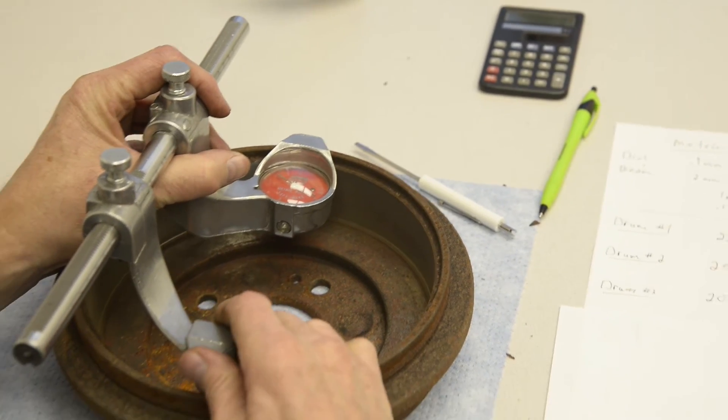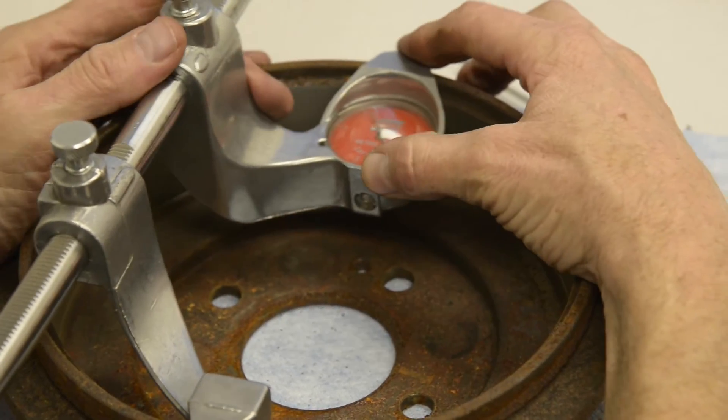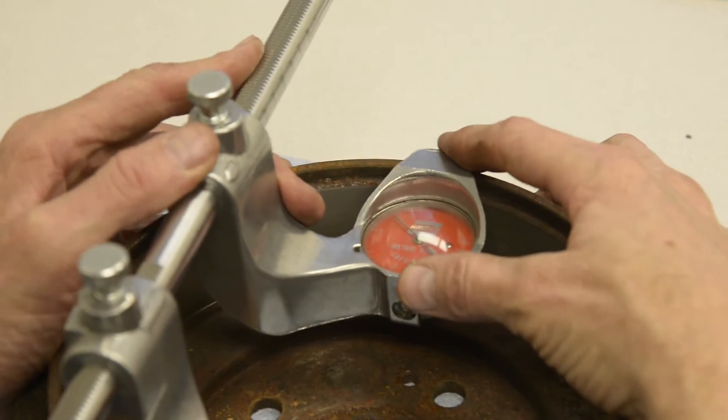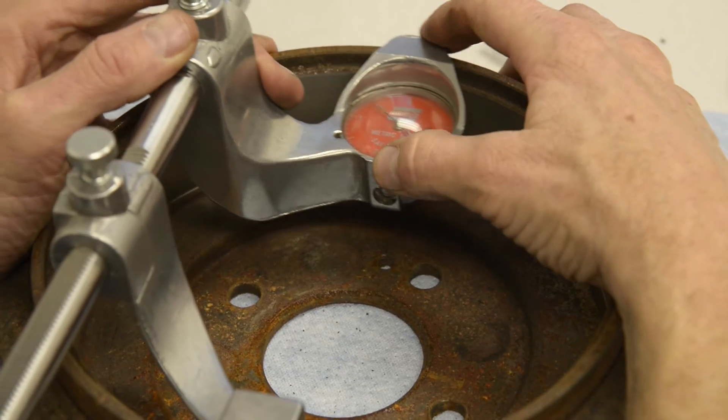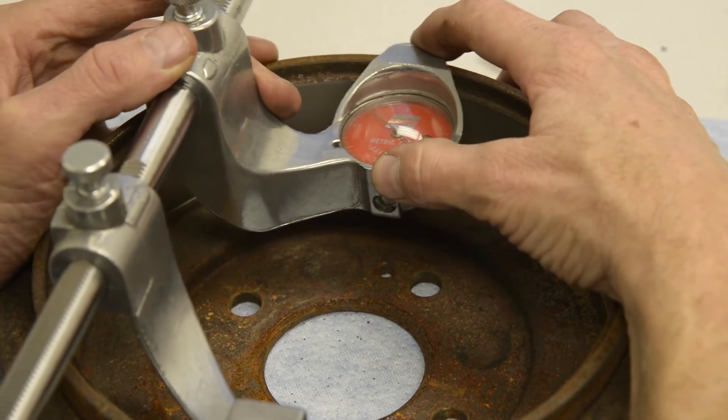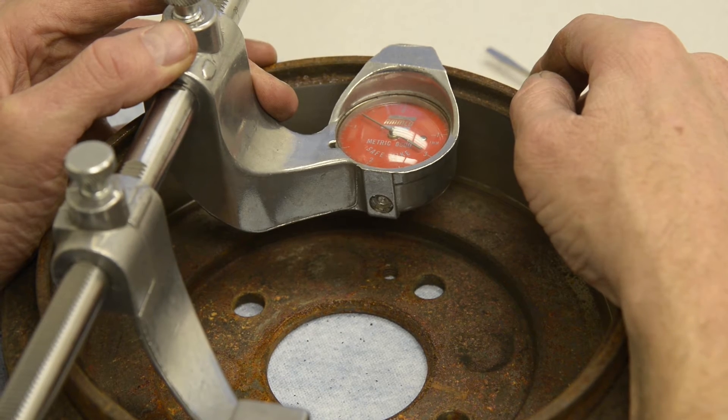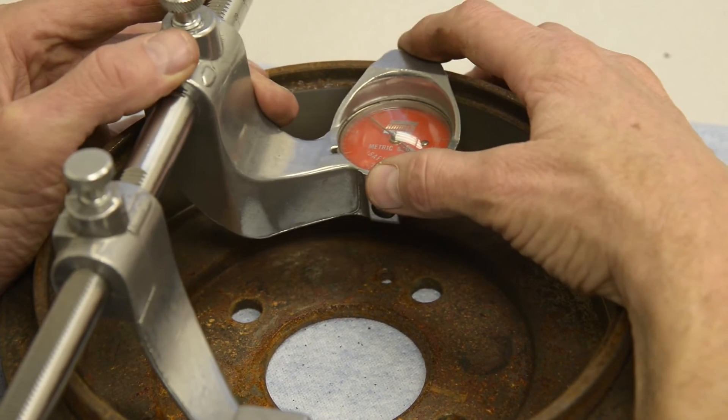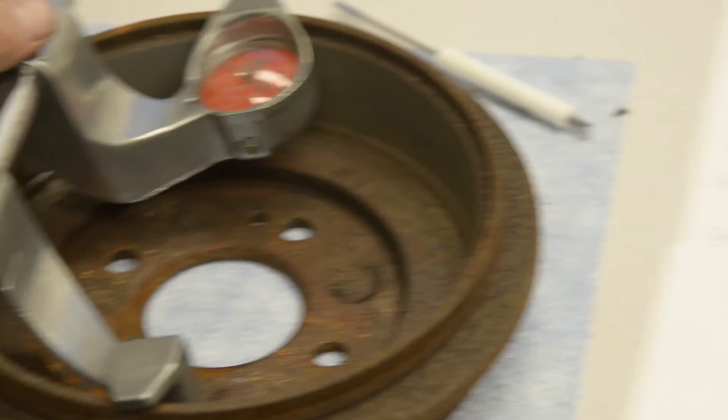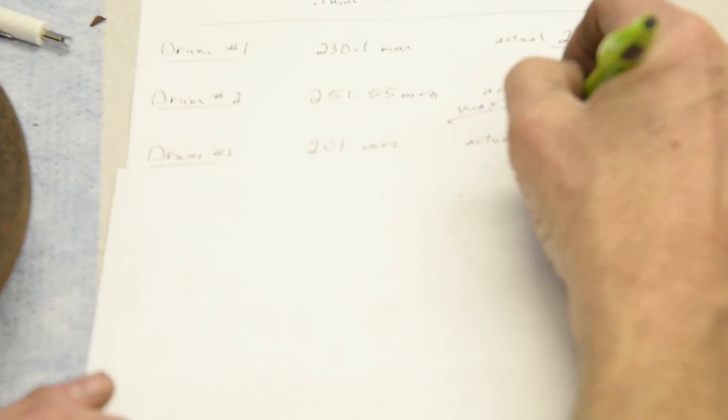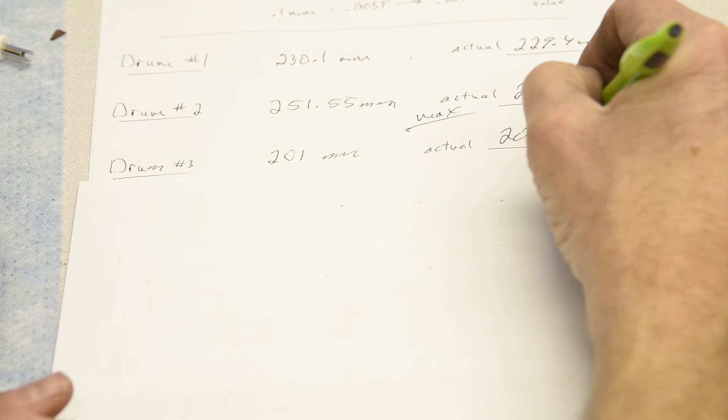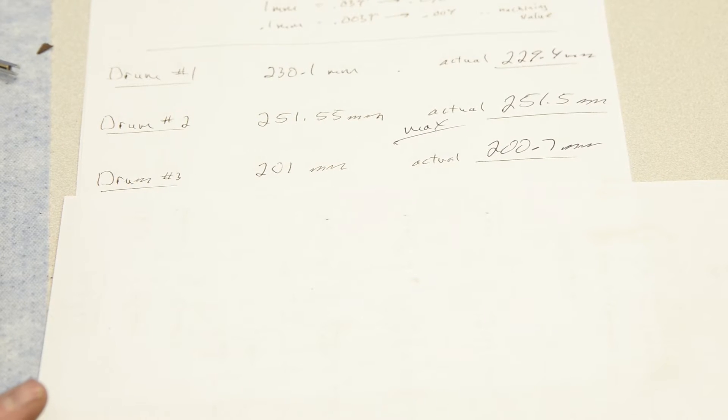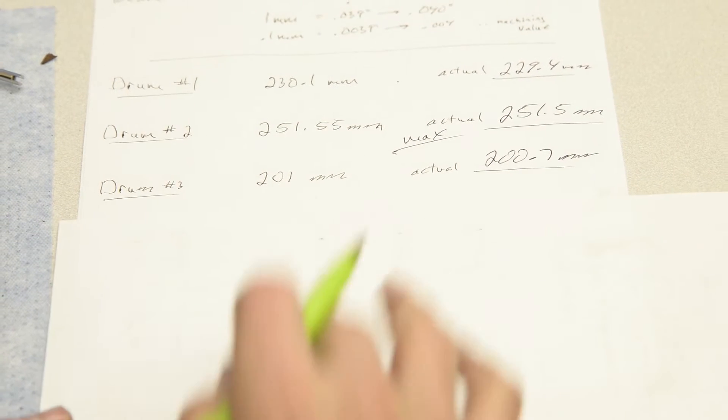What do we have? Let's put it in. Looks like we're just over 200. I'm getting like 200 and 0.7. 200.7 millimeters. This drum's okay. It's going to be put back in service.